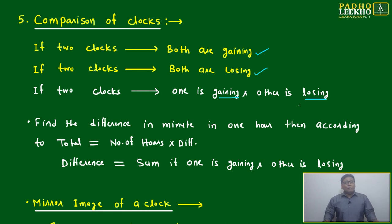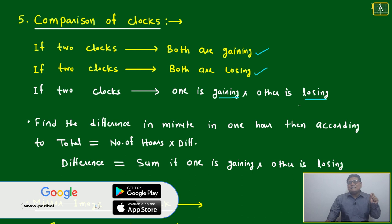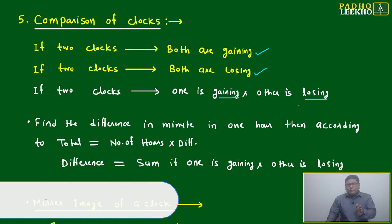But the watch is actually gaining the time. This watch is gaining, just suppose whatever value, one minute per hour or two minutes per hour, whatever is there. Just keep on gaining. Then first thing, how many minutes this watch is slow, that first they will make up.